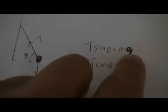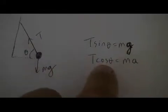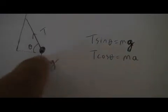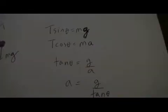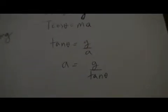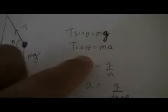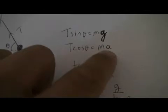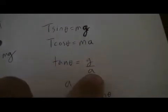So it's T sin θ, which is the vertical component of T, is equal to mg, the weight of the object. And then T cos θ is the horizontal component, is equal to ma. Therefore, tangent θ, if you divide these two equations, you get rid of the tension T in the pendulum. You get rid of the m. So all it really depends on is g over a.